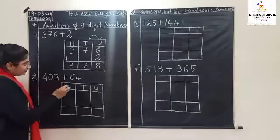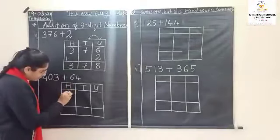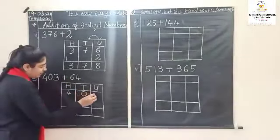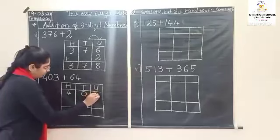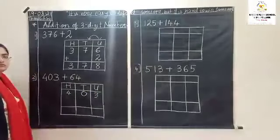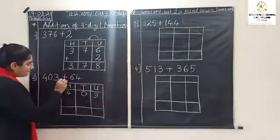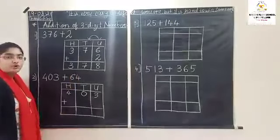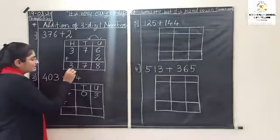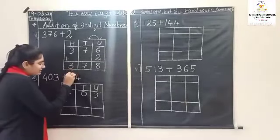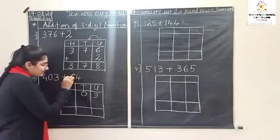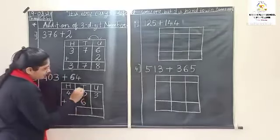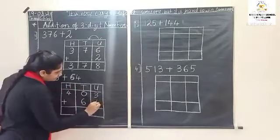Four hundred and three — so four will come here. Four hundred and three plus sixty-four. Sixty-four is a two-digit number, so this six is in tens place. Six will come here and four will come in units place.